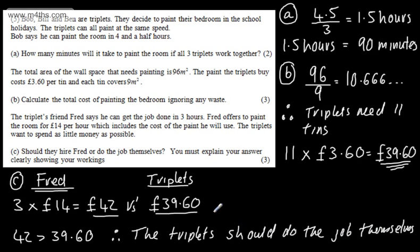With all of these questions, don't just do the maths — have a concluding statement, as that will often be worth one mark. The question says 'should they hire Fred or do the job themselves?' It's not just asking for the maths. The triplets should do the job themselves, as £42 is greater than what they would have to pay if they did it themselves.